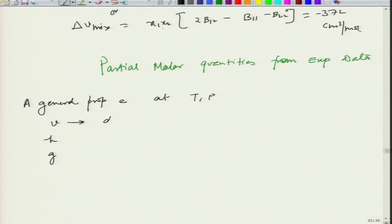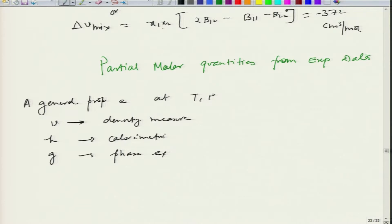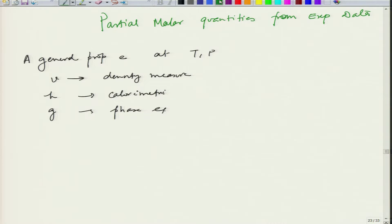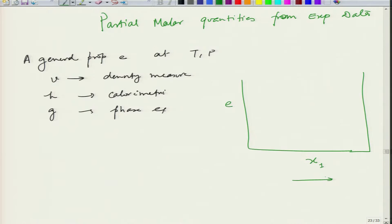Volume comes from density measurement, enthalpy comes from calorimetry, and free energy comes from phase equilibria data. Let me draw a schematic representation of E as a function of x1, ranging from 0 to 1, where the data starts from a pure component, and I draw a dashed line following this data.